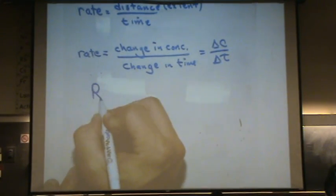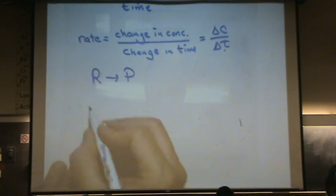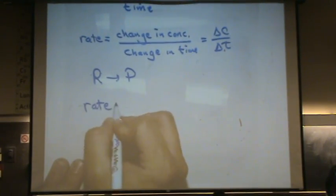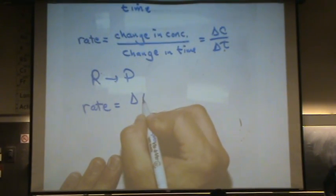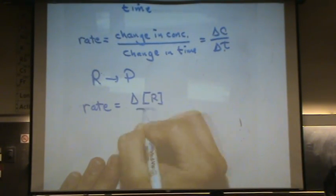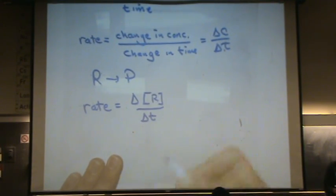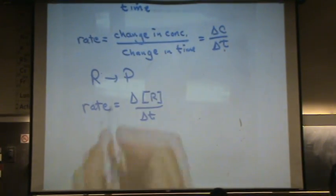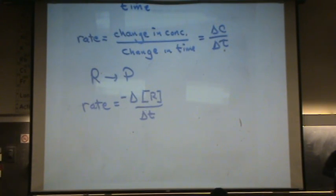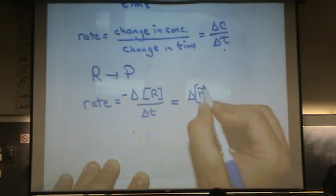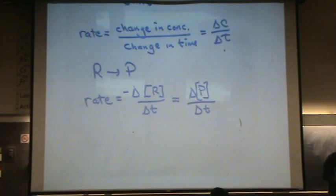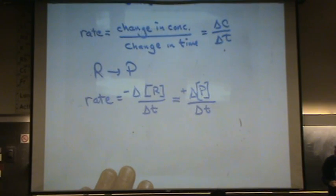So if we have reactants going to products, then the rate is the change in concentration of the reactants over the change in time. But remember I'm losing reactants, so I'll put minus to indicate loss. And I'm also changing product concentration over change in time. And remember I'm gaining products so I'll put a plus for that.